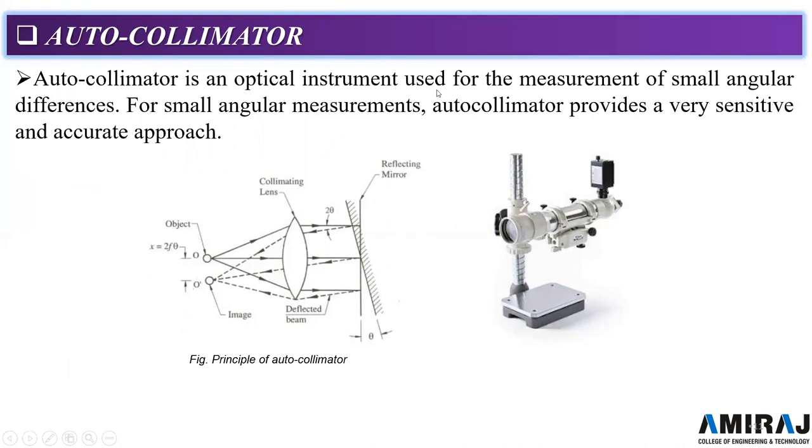Autocollimator is an optical instrument used for measuring small angular differences. Here you can see the principle. If there is a difference in focal length, we will get angle variation converted. So here, autocollimator measures small angle differences. Autocollimator provides a very sensitive and accurate approach. So autocollimator for small variation in angle is very accurate and sensitive, which can easily reflect and measure accurately.